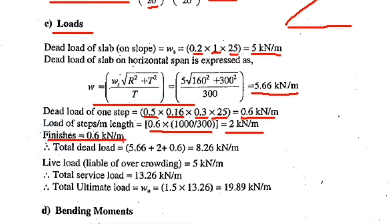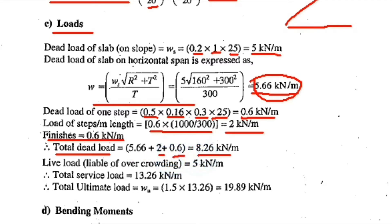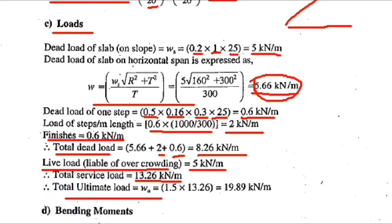Finishes load is taken as 0.6 kN/m. Total dead load equals 5.66 (horizontal slab load) plus 2.0 (step load) plus 0.6 (finishes) equals 8.26 kN/m. Live load for overcrowding is taken as 5 kN/m, giving a total service load of 13.26 kN/m. Ultimate load equals 1.5 into 13.26, giving 19.89 kN/m.